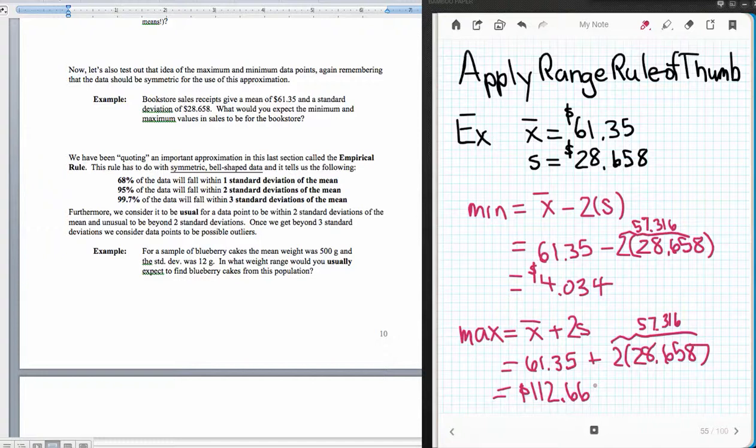Let me see. 61.35 plus 57.316. That would be 118. Sorry, I hit a wrong button on my calculator. And so this would give me 118.666.